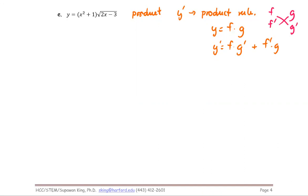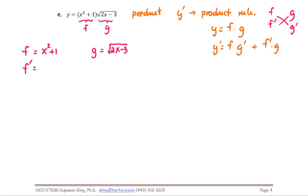Let's identify the functions. We let f be x squared plus one, and g be the square root of two x minus three. The f prime, the derivative of f, is two x plus zero, which is just two x.